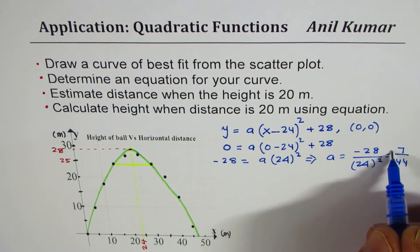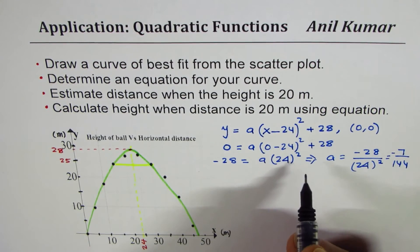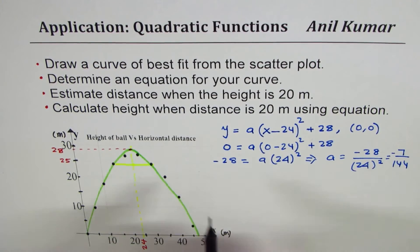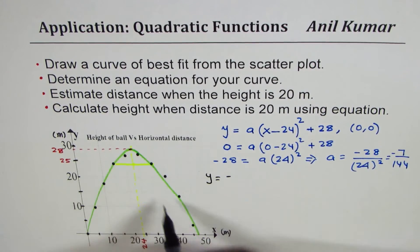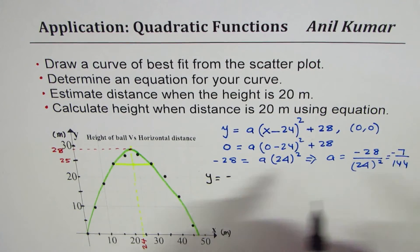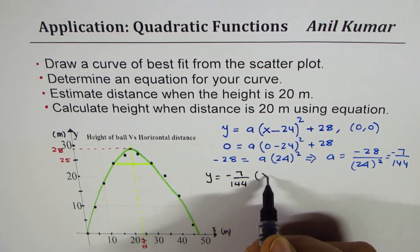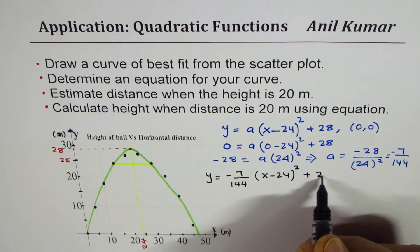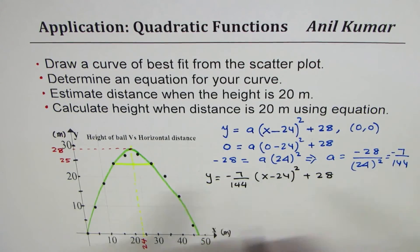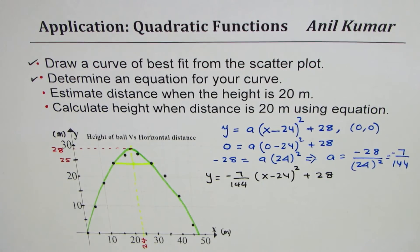It's with negative sign. What we get here is the equation of the curve. We already approximated a lot so I'll keep this as a fraction. We have y = -7/144(x - 24)² + 28. So we've drawn the line of best fit, now we also found the equation of the parabola which we have sketched using this scatter plot.